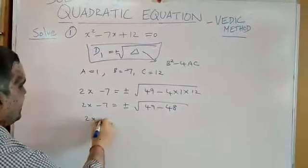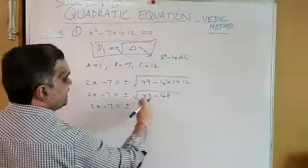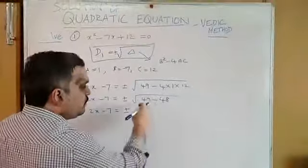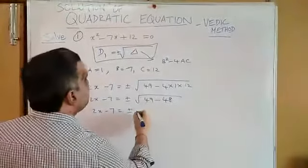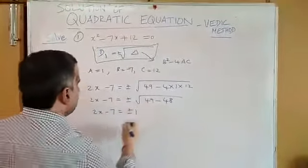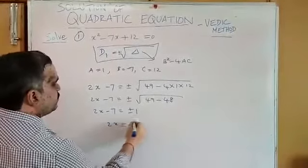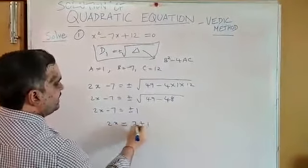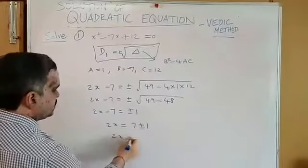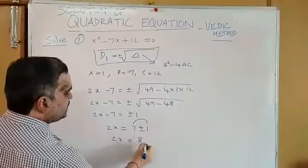2x minus 7 is equal to plus or minus square root of 49 minus 48: 1. Square root of 1 is equal to 1. 2x is equal to 7 going other side: 7 plus or minus 1. So, 2x is equal to 8 or plus 6.